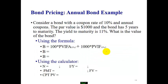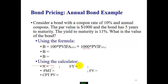Let's look at a bond pricing example. This is an annual bond with a 10% coupon rate, par value of $1,000, 5 years to maturity, and YTM of 11%. A 10% coupon rate implies a $100 coupon payment, and at the end we have a principal of $1,000. The annuity factor is based on 11% over 5 years, and we apply a single discount factor of 11% for 5 years. Using a calculator with N=5, I/Y=11, PMT=$100, FV=$1,000, we compute PV to get $963.04.